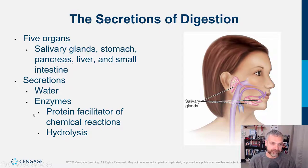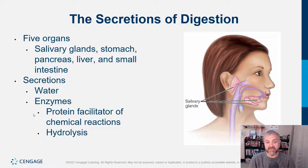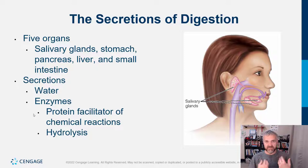The secretions of digestion: the salivary glands produce saliva; the stomach produces gastric juice — a combination of stomach acid and pepsinogen, which becomes pepsin, an enzyme that digests proteins. The pancreas produces bicarbonate as a buffer, plus pancreatic amylase to digest carbs, pancreatic lipase to digest lipids or fats, and the proteases to break down proteins. The liver makes bile — using cholesterol to make bile salts. The small intestine also has enzymes right in the lining — the brush border — that finish off the last little bit of digestion before food is absorbed.